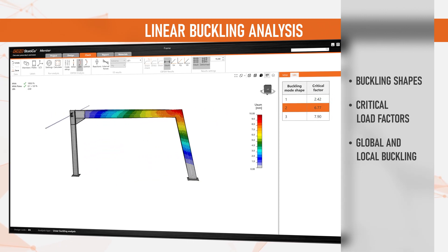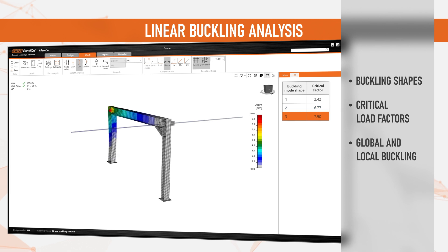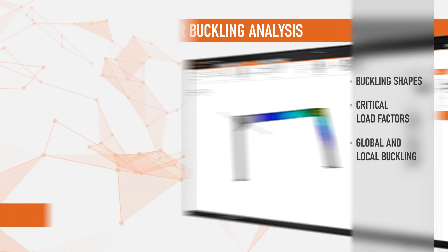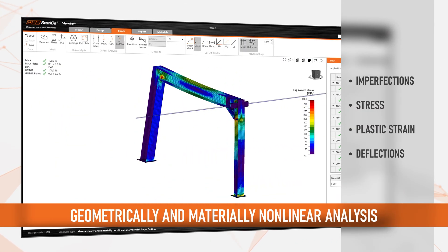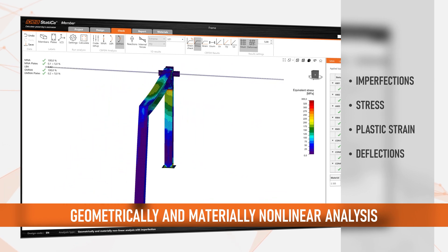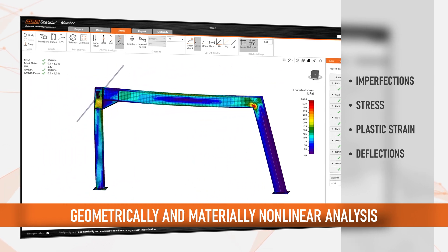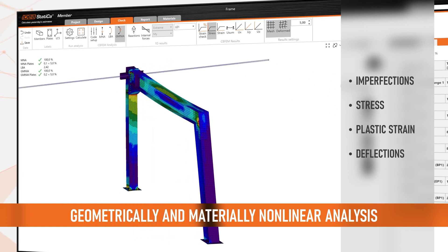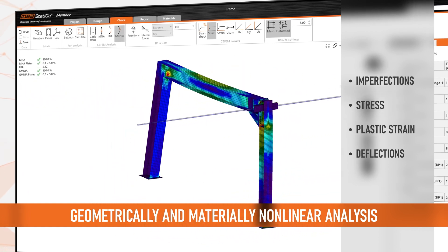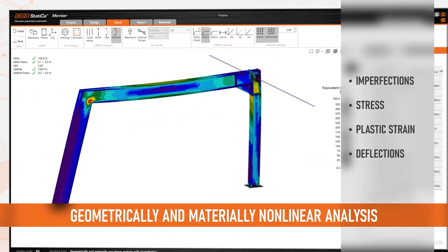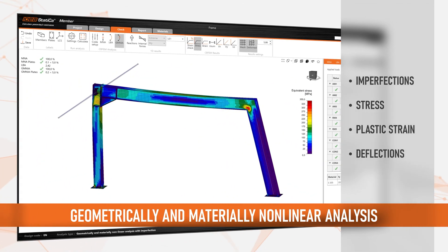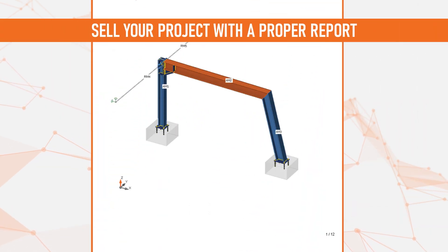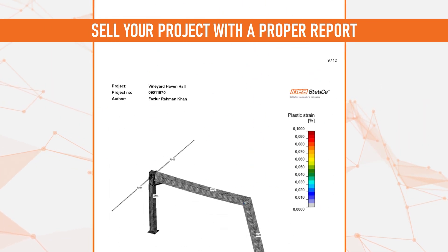Now you can consider the global buckling of the member in combination with the local buckling of slender plates. Then evaluate the critical buckling shape for user-defined initial imperfection by applying sophisticated non-linear analysis with imperfections. And compare the deflections of the member to the provided limit states in the SLS. You are now ready to generate your report and prove your calculations with ease.